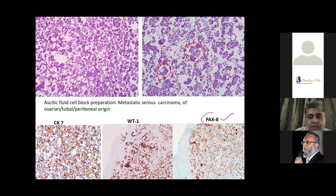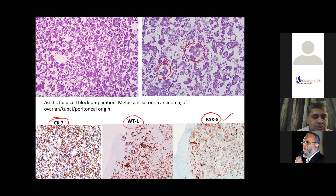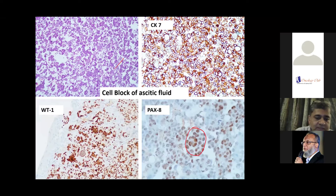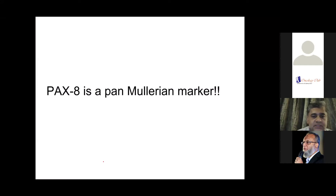In this case it is a serous carcinoma — PAX8 and WT1 will tell you it's a serous cancer. The picture shows a lot of tumor cells positive for CK7. PAX8 is a nuclear marker — it stains the nuclei. WT1 is also a nuclear marker, showing it's a serous cancer. PAX8 is a pan-Müllerian marker, so all clinicians should understand that when you see PAX8 in a report, it basically tells you it's possibly a Müllerian tumor.